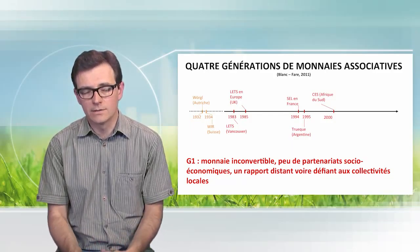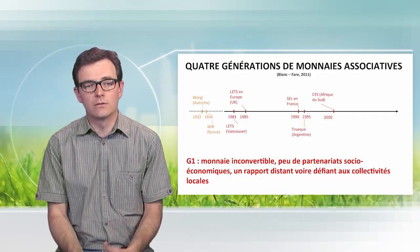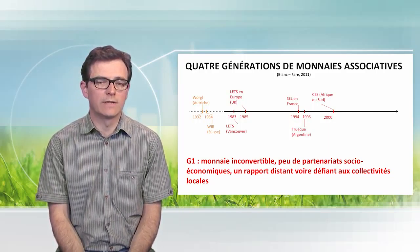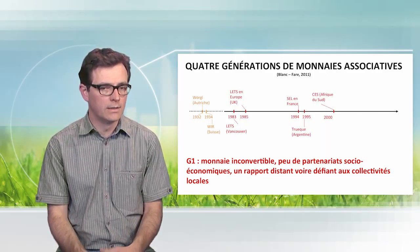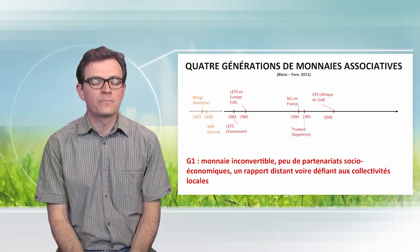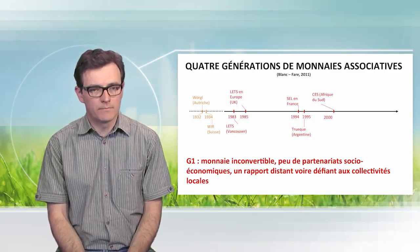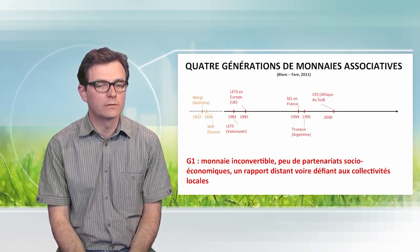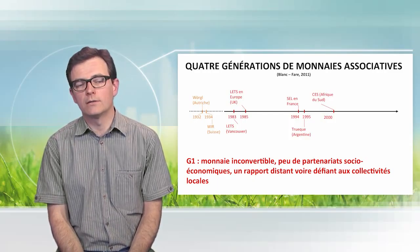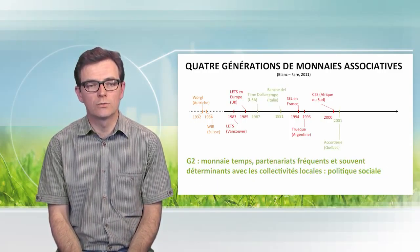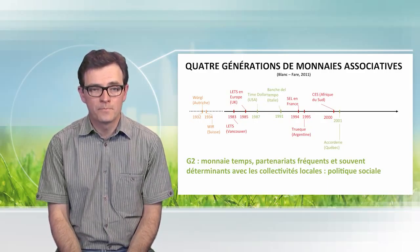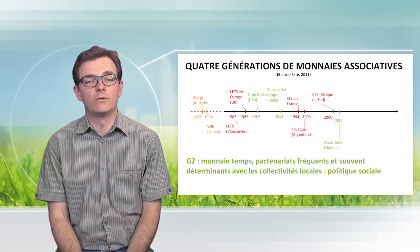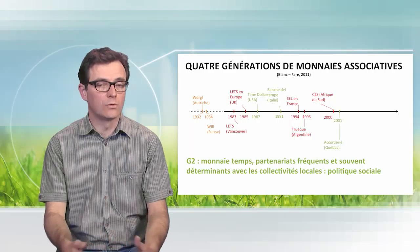There is a prehistoric era with relatively famous experiments which date before the 1980s. In the 80s, we find a new wave of associative currencies with experiments such as the LETS in Vancouver, and in France they were called ECL — an inconvertible currency, usually fairly isolated in a given socioeconomic environment, especially in France. A second generation appeared in 1987 in the United States.